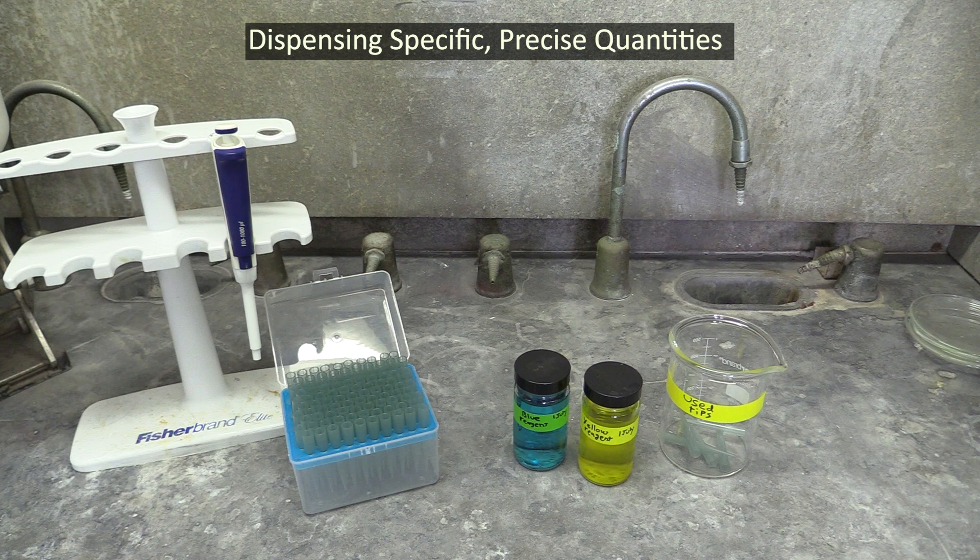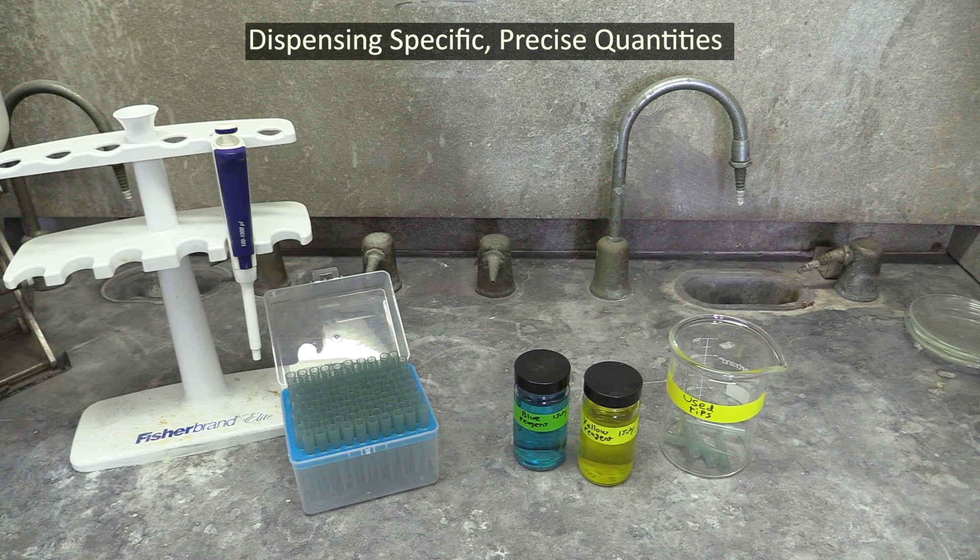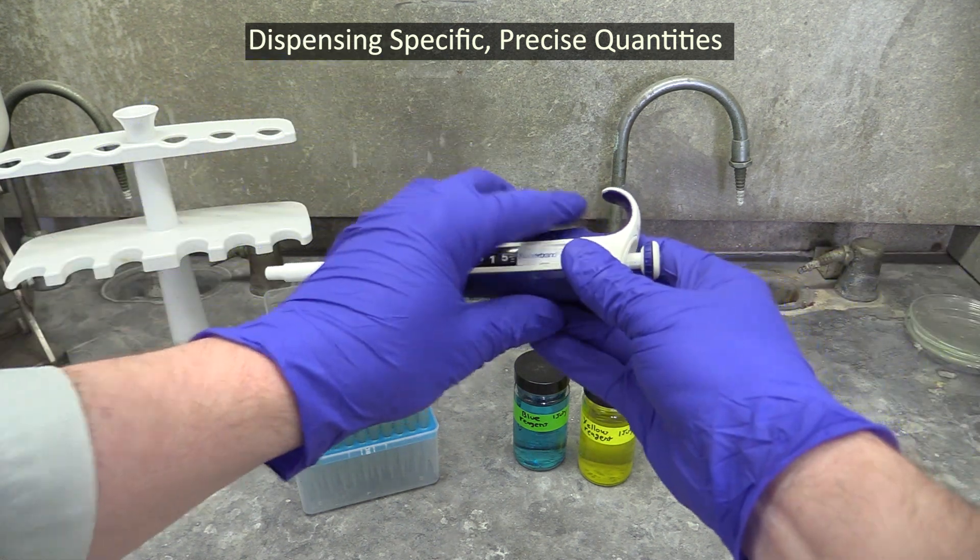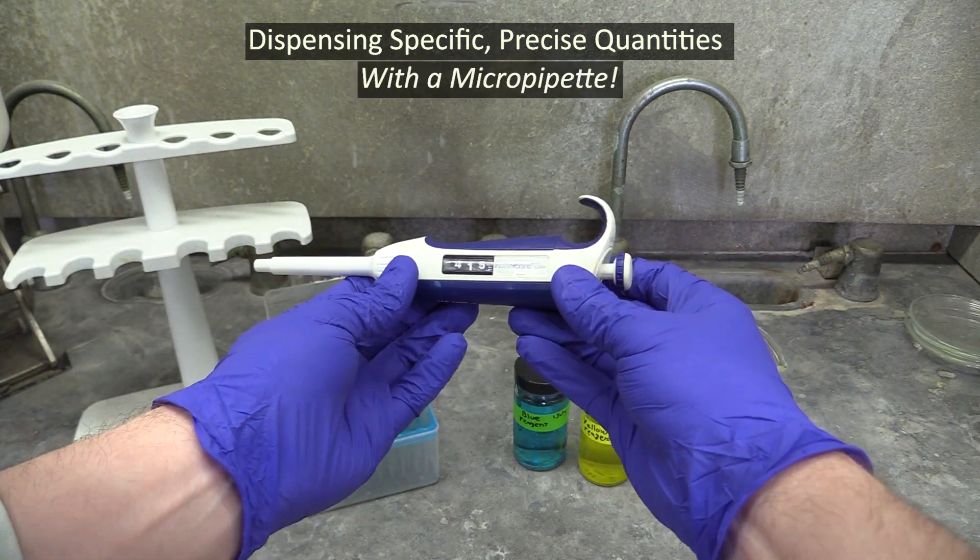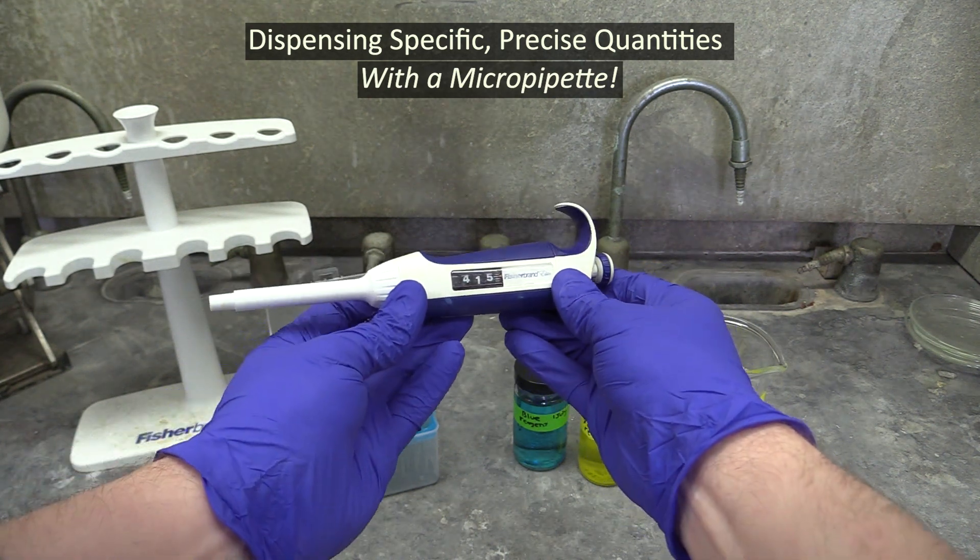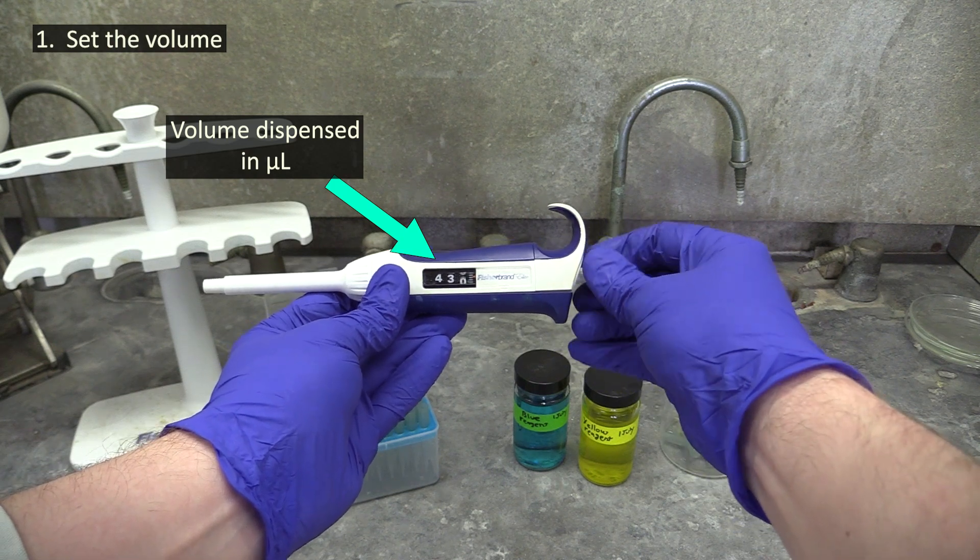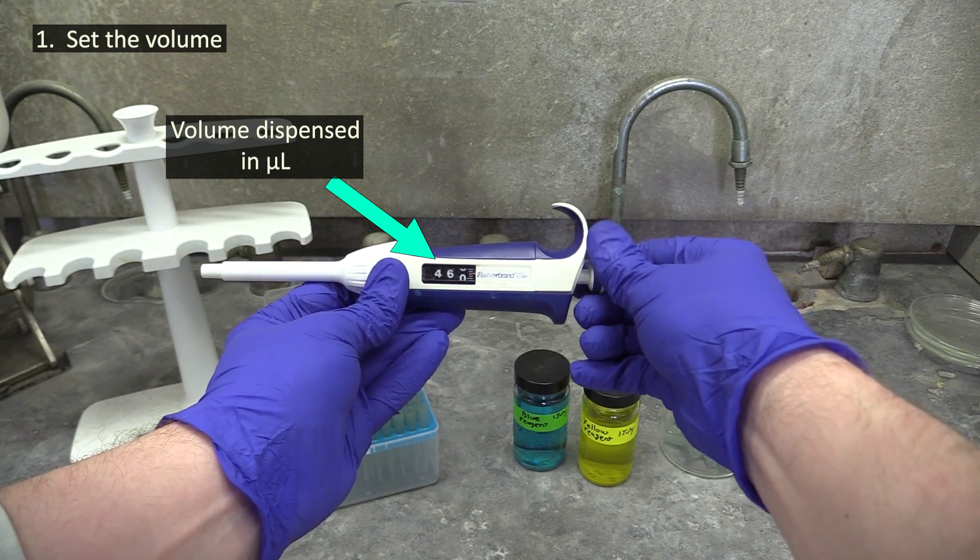Speaking of acids, one of your first procedure steps will be to add some specific precise quantities of them to a vial, and the best tool to do this with is a micropipet. In case you're not familiar with using one, here's how they work. First, you set the amount of liquid you want to dispense with it, which is indicated on its dial.